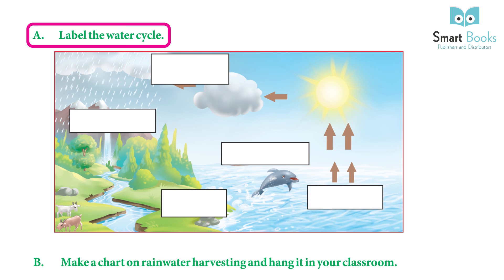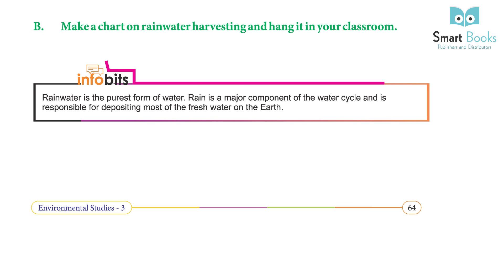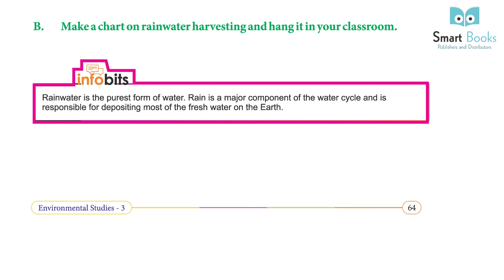Activities: (a) Label the water cycle — do it yourself. (b) Make a chart on rainwater harvesting and hang it in your classroom — do it yourself. Fun facts: Rainwater is the purest form of water. Rain is a major component of the water cycle and is responsible for depositing most of the fresh water on the Earth.